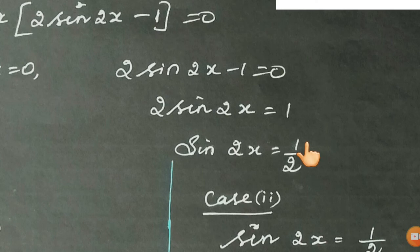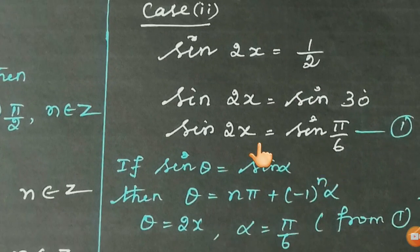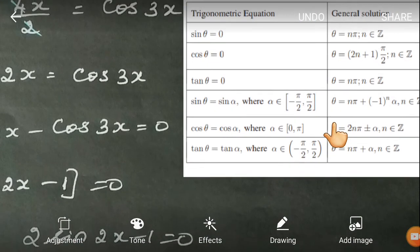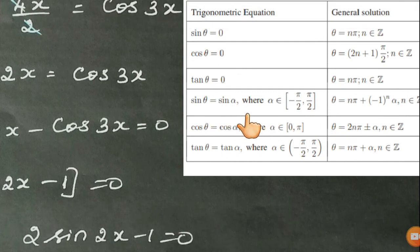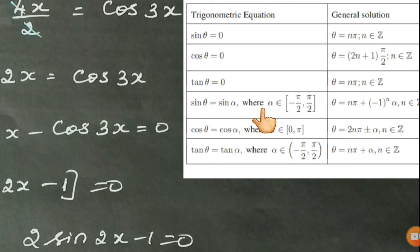For Case 2: sin 2x equals 1/2. We write this as sin 2x equals sin(π/6). Using the general solution formula for sin θ = sin α: θ = nπ + (-1)^n · α, where n belongs to Z.